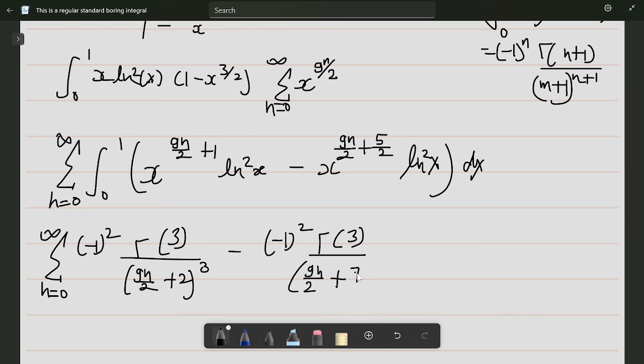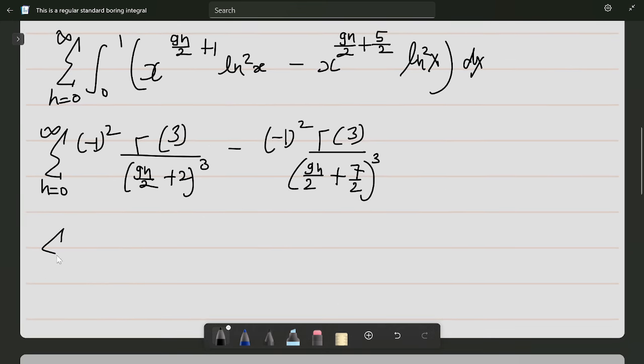This can be written as sum from n equals 0 to infinity. This is just 2, and I can take 2 by 9 common from both terms. This will be 8/729 times the sum from n equals 0 to infinity of 2/(n + 4/9)³ minus 2/(n + 7/9)³.